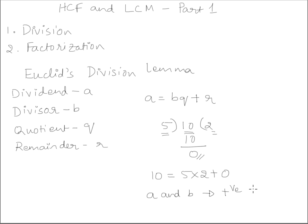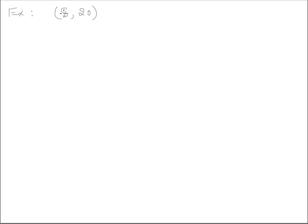Let's see how we can use this to find the HCF of two numbers. Example one: HCF(8, 20). So 8 is the divisor and 20 is the dividend. 8 times 2 gives us 16, which gives us a remainder of 4.